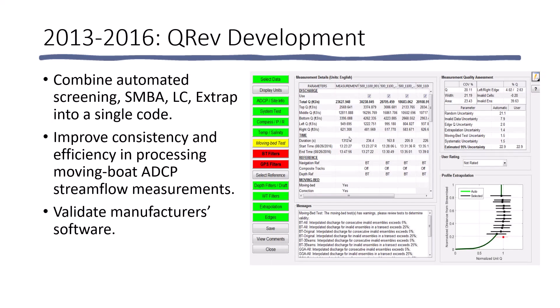In 2013, the Office of Surface Water approved the development of QREV. This allowed us to combine the automated screening demonstration project SMBA LC and Extrap into a single code. It also allowed us to improve the consistency and efficiency in processing moving boat ADCP stream flow measurements and would serve as a validation of whatever the manufacturers were doing in their software.